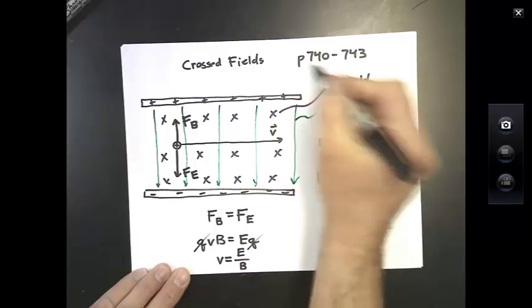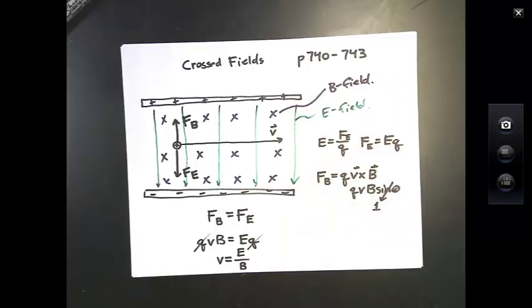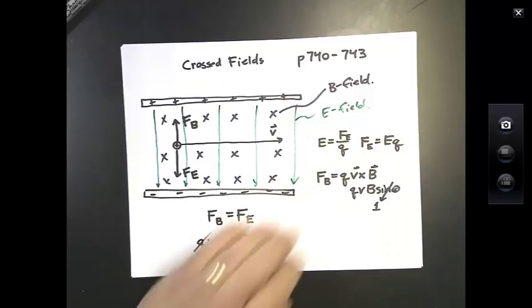When you read the book starting on page 740, there's a nice discussion of an application of this. That is, when the electron was discovered and its charge to mass ratio was discovered, how did that all work? It was crossed fields that made it possible. As you continue reading, you're going to read about something called the Hall effect, which is a little strange. Let me give you a short introduction to the Hall effect.